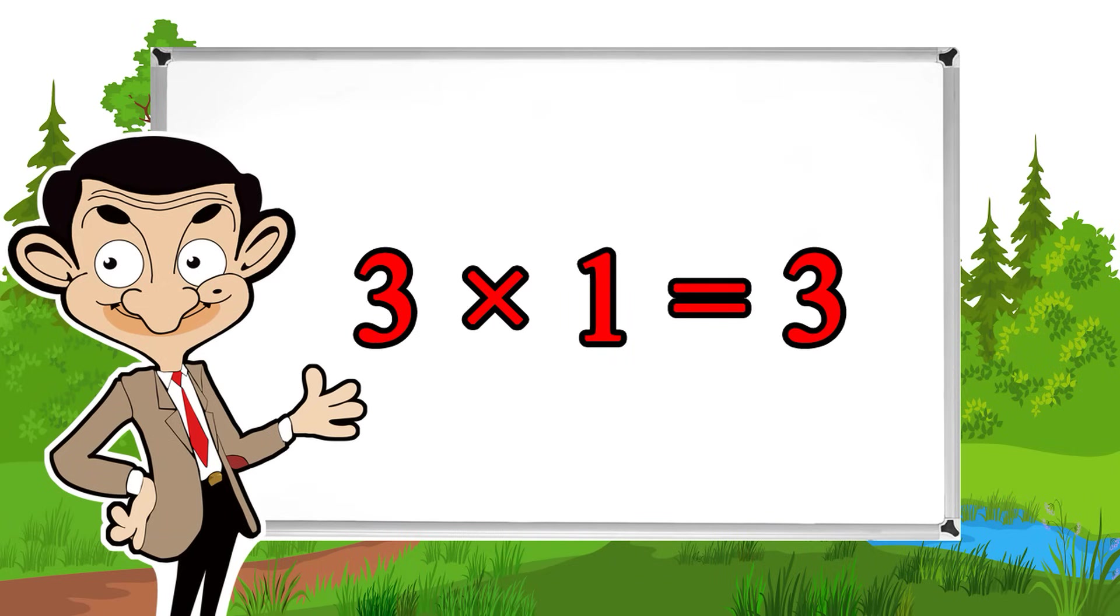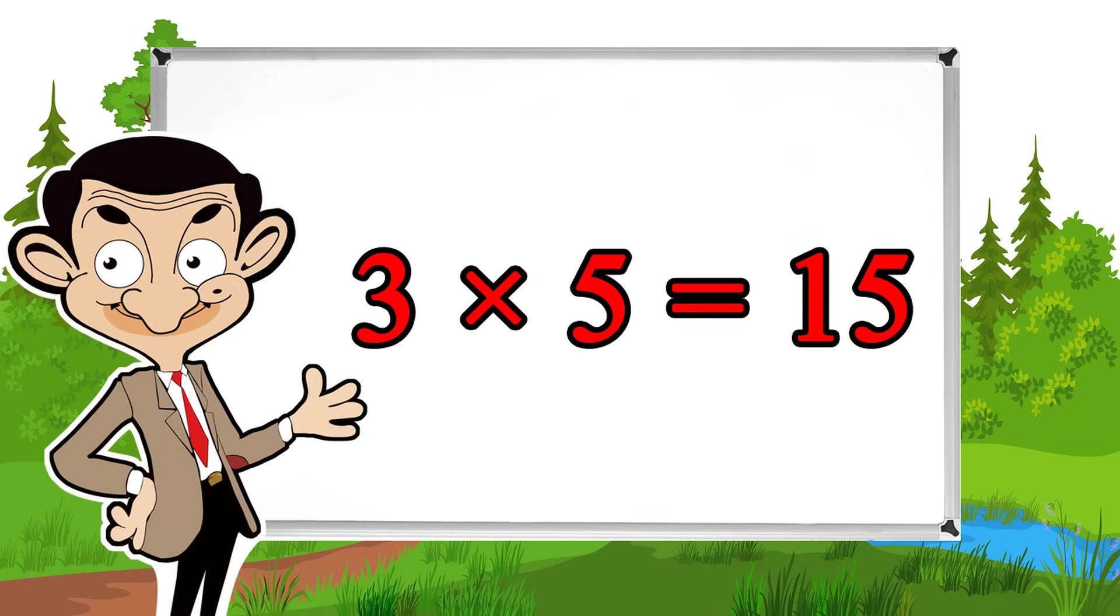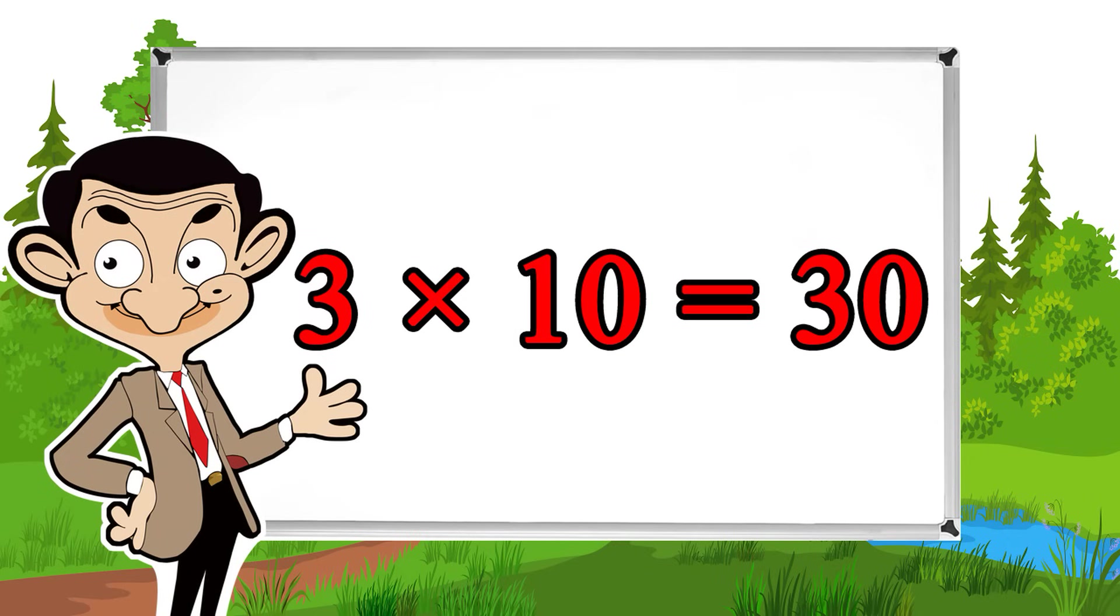3 times 1 equals 3, 3 times 2 equals 6, 3 times 3 equals 9, 3 times 4 equals 12, 3 times 5 equals 15, 3 times 6 equals 18, 3 times 7 equals 21, 3 times 8 equals 24, 3 times 9 equals 27, 3 times 10 equals 30.